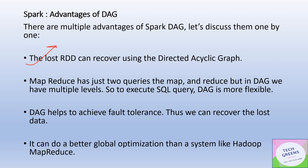Unlike Hadoop MapReduce which only has two operations — map and reduce — working consecutively, DAG can have multiple levels. This makes it an ideal choice for executing Spark SQL or SQL-based queries, as DAG is much more flexible. It identifies operations at the transformation level and performs optimization. As DAG maintains the entire RDD lineage, it helps achieve fault tolerance, and its smart optimizations make it better suited for global optimization compared to Hadoop MapReduce.